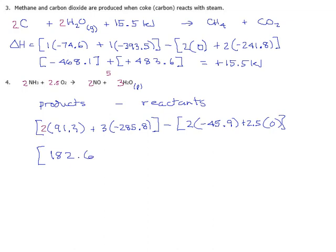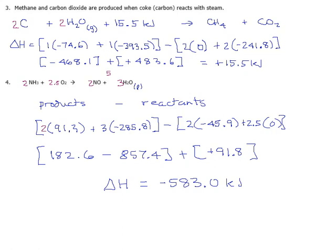So, 2 times 91.3 is 182.6, and then we have 3 times 285.8, so this is minus 857.4 minus 2 times 45.9 would be minus 91.8 plus zero. These negatives cancel. And so, 182.6 minus 857.4 plus 91.8. I get that the delta H for this is minus 583.0 kilojoules. That makes the reaction exothermic. So, if you were writing this as a thermochemical reaction, you could either put plus 583 kilojoules on the right side, or you could write the delta H just like this, separate from the reaction.